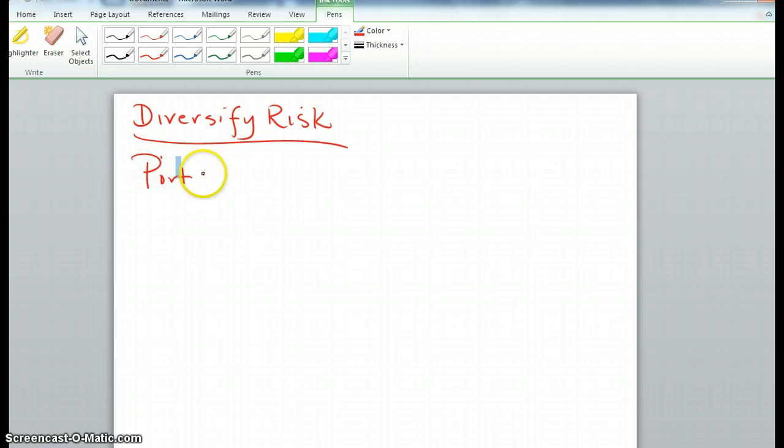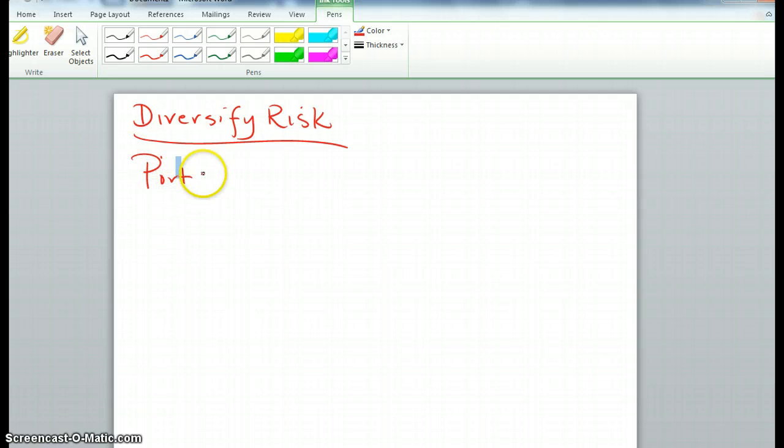And as you read in your books, beta measures the riskiness of the stock in comparison with the market. So I'm going to put beta: riskiness in comparison with the market.